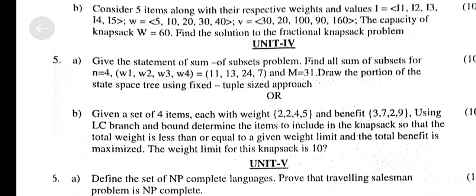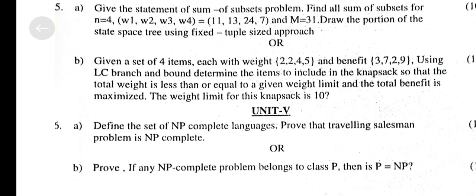B. Given a setup of 4 items each with weights {2, 2, 4, 5} and benefits {3, 7, 2, 9}. Using LC Branch and Bound, determine the items to include in the Knapsack so that the total weight is less than or equal to a given weight limit and the total benefit is maximized. The weight limit for the Knapsack is 10.